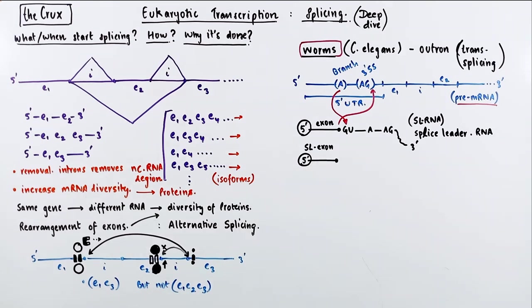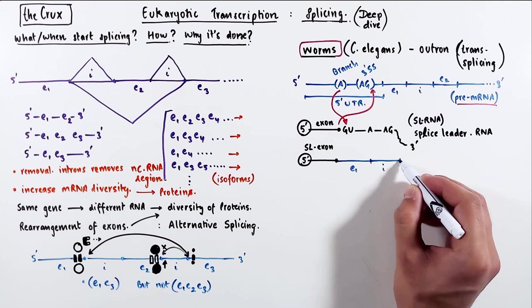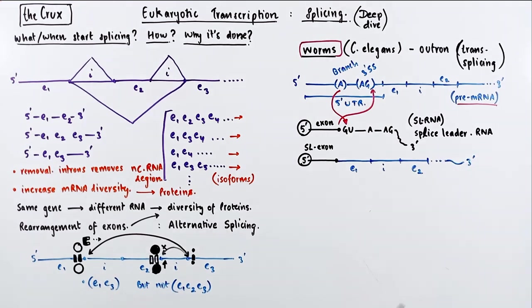Now, as a result of this, you get the slRNA exon in front of the pre-mRNA, thereby replacing the 5' UTR which existed on the pre-mRNA.